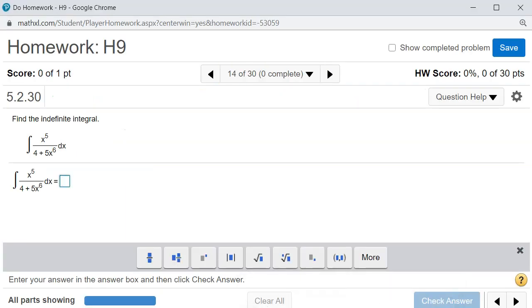So we're going to have 1 over 30. Then we have a natural log of 4 plus 5x to the 6th power. If you want to put the absolute value sign, that's fine too. Maybe let's leave it out for now, see how the system treats it, plus some constant c. Let's check the answer.